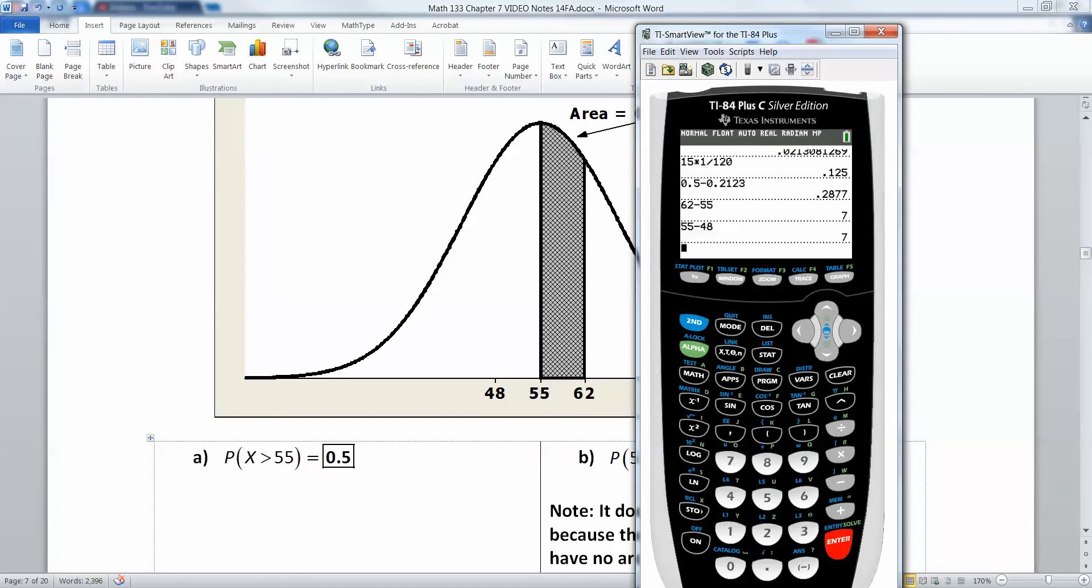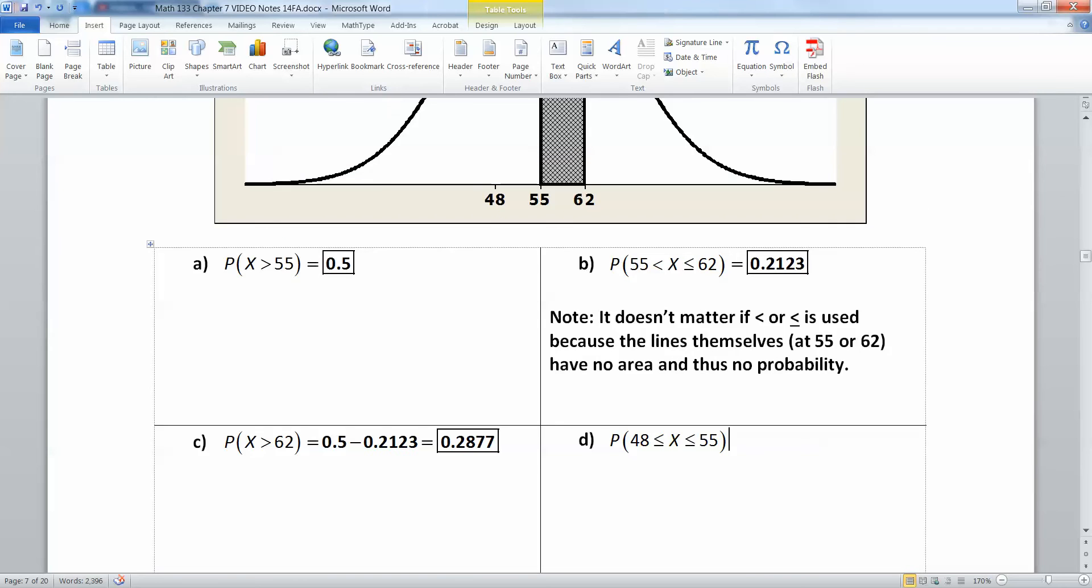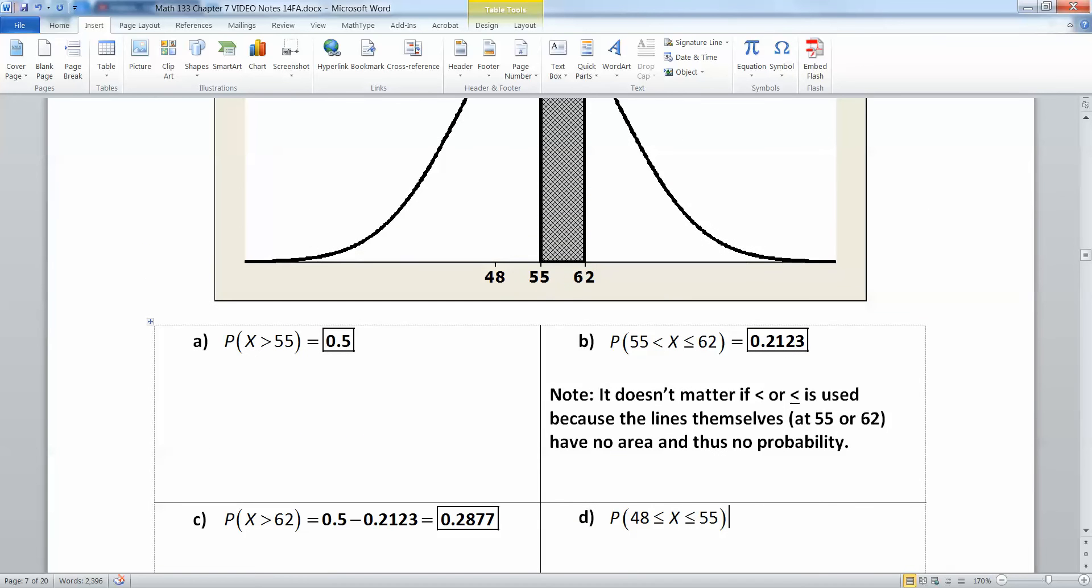So that distance over there on the left and the distance over there on the right are exactly the same. 55 if you'll recall is the middle line of this graph, so 48 to 55 should be the exact same distance as 55 to 62, namely 0.2123 because of symmetry on the curve.